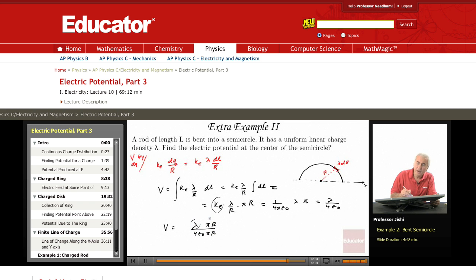Then lambda times pi r—pi r is just the length of the rod—so lambda times pi r is just the total charge q. So it becomes q over 4 pi epsilon 0 r. This is the electric potential produced by the rod, which is the same as ke q over r, where q is the total charge on the rod.